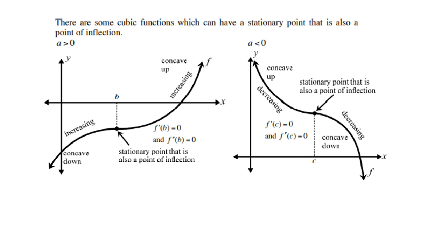There are some cubic functions which can have a stationary point that is also a point of inflection — yes, that is possible. If a is greater than zero, you get concave down, an increasing function, then your stationary point is also the point of inflection, and then you get an increasing function or concave up — so concave down to the left, concave up to the right. When a is less than zero, you get a decreasing function which is concave up, then your stationary point and point of inflection, then concave down or decreasing. These two sketches are very important — make sure you understand them.